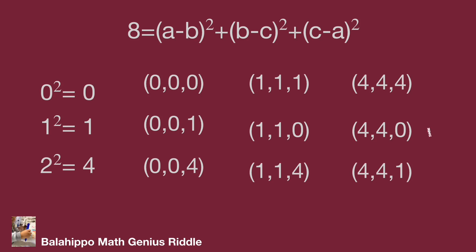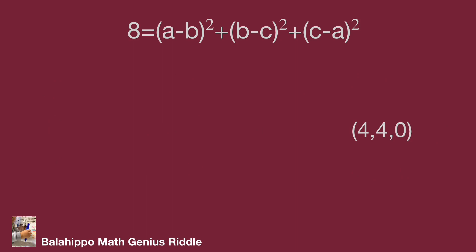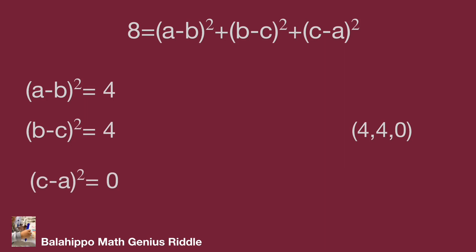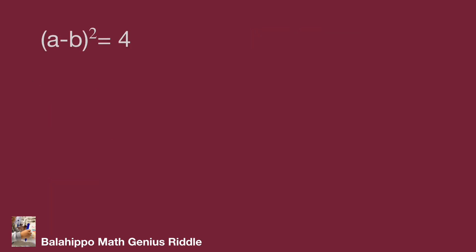Substitute 4, 4, 0 into the three square items: quantity a minus b squared equals 4, quantity b minus c squared equals 4, and quantity c minus a squared equals 0. From quantity c minus a squared equals 0, we get c equals a. Substitute c by a into quantity b minus c squared, which now equals b minus a squared equals 4. So the new input is: quantity a minus b squared equals 4 and quantity b minus a squared equals 4.